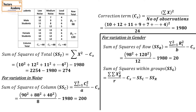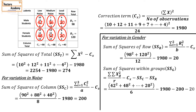Next comes the sum of squares within groups. There are 6 different groups formed: male students with low, medium, and loud noise, and female students with low, medium, and loud noise. We need to find the total of each group, square them, add them, and divide by 6, minus the correction factor, and minus the previous totals — that is, the sum of squares of columns and sum of squares of rows. That comes to 16.33.